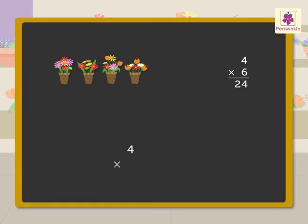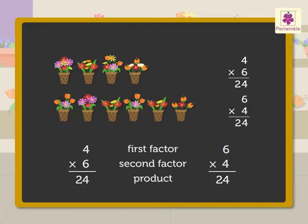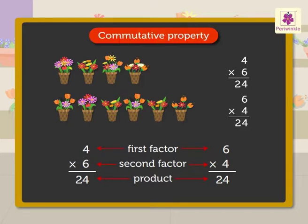So, we see that four into six is equal to twenty-four, and six into four is also equal to twenty-four. Thus, we know that even after changing the order of the factors, the product does not change. This property is also called commutative property.